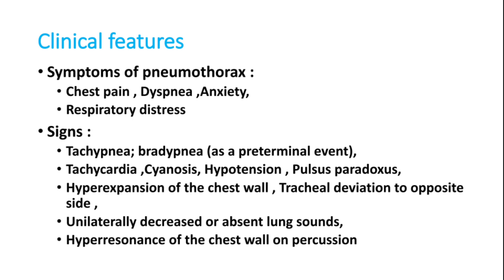Signs include tachypnea or bradypnea — bradypnea is a very bad sign in pneumothorax. Tachycardia, cyanosis, hypotension, shock, and pulsus paradoxus can all occur in tension pneumothorax. Hyper-expansion of the chest wall and tracheal deviation to the opposite side can also occur.